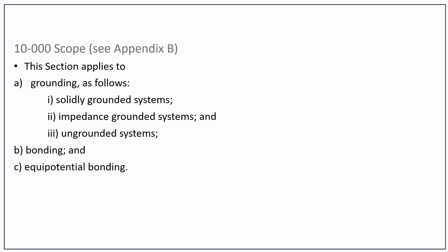It's the scope of section 10. The section applies to grounding as follows: solidly grounded systems, impedance grounded systems, and ungrounded systems, and it's in terms of bonding and equal potential bonding.